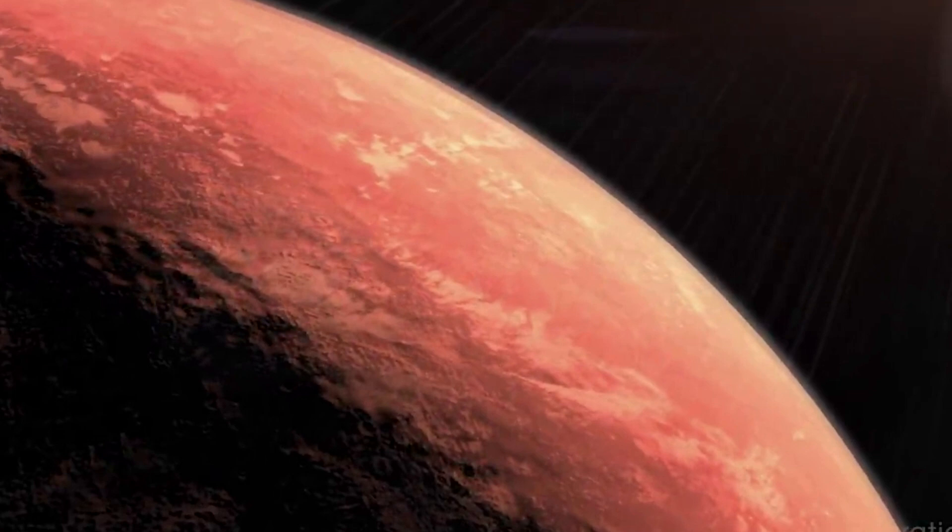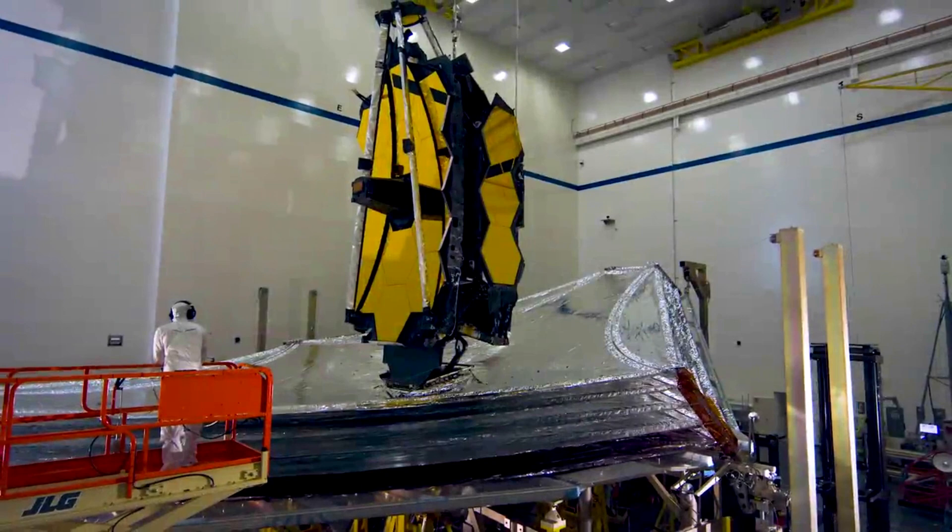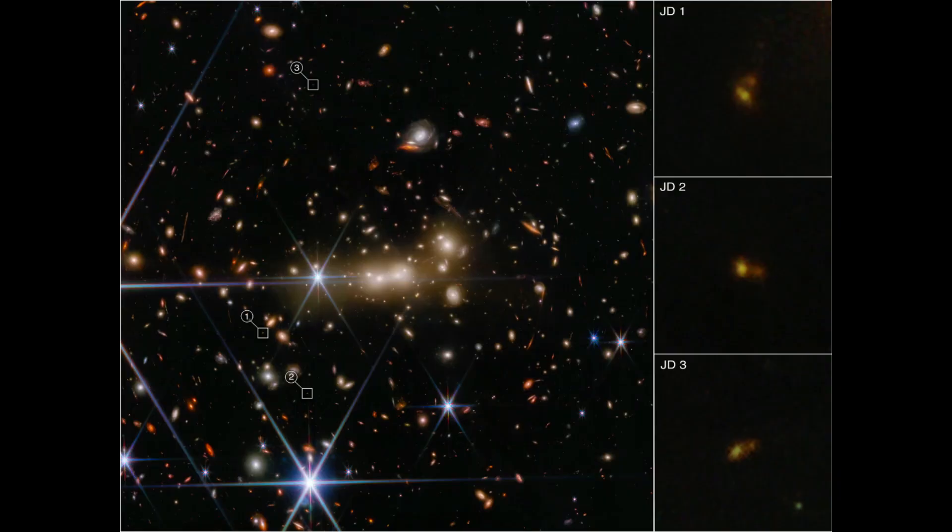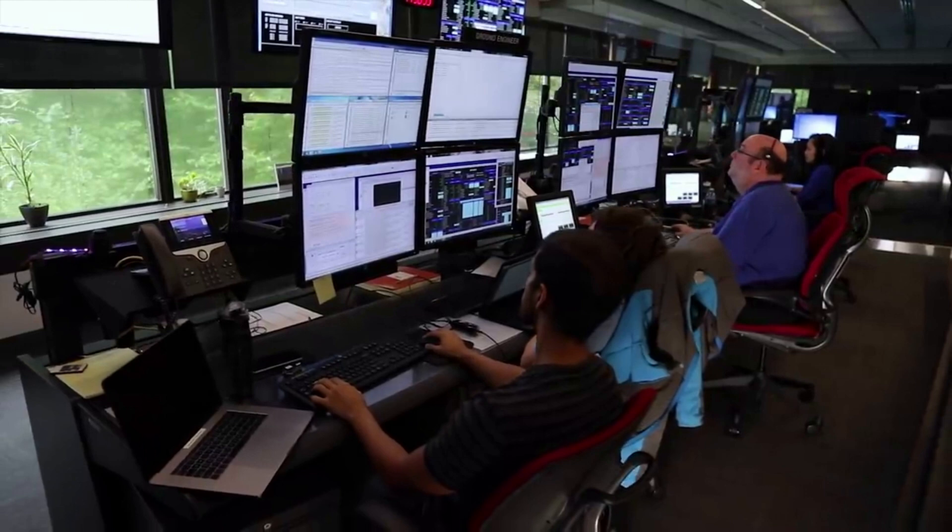I think my favorite part is, for so many new Webb images we get, if you look in the background there are all these little dots and those are all galaxies. It's amazing the amount of information that we're getting that we just weren't able to see before. And this is not a deep field, this is not a long exposure. We haven't even really tried to use this telescope to look at one spot for a long time. This is just the beginning.